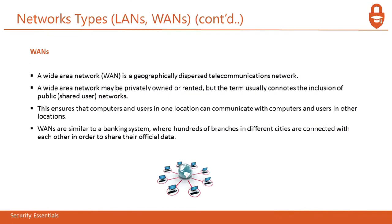WANs, or wide area networks, are geographically dispersed telecommunication networks. LAN is in a particular building, home, or office, but WANs can connect multiple locations dispersed throughout a geography. A wide area network may be privately owned or rented and connects the inclusion of public networks, ensuring that computer users in one location can communicate with computer users in another location. WANs are similar to a banking system where hundreds of branches in different cities are connected with each other to share their official data.